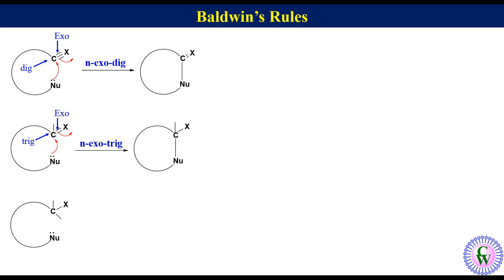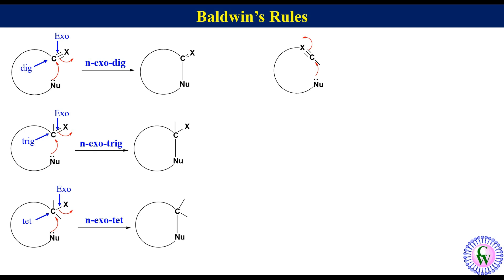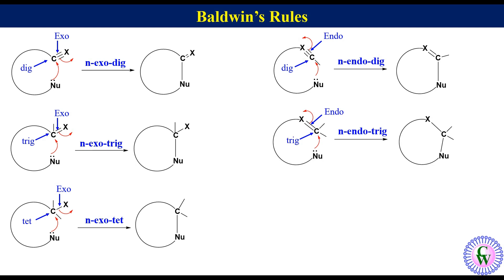For another substrate, the cyclization product forms where the bond being broken is exo and the electrophilic atom is tetrahedral (sp3-hybridized), so the reaction is named N-exotet. When this substrate undergoes cyclization, the product includes X as part of the ring. Here, the bond being broken is endo and the electrophilic center is diagonal (sp-hybridized), so it is named N-endodig. Similarly, we can show the model reaction for N-endotrig.